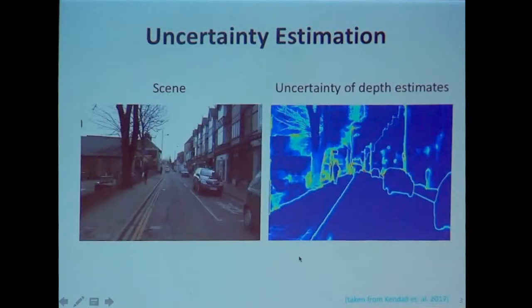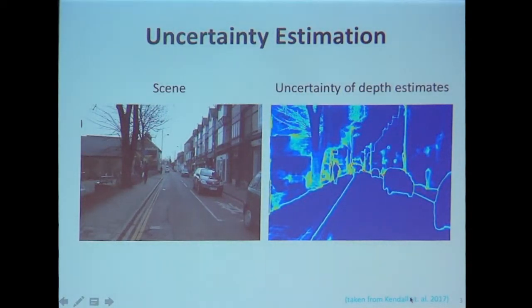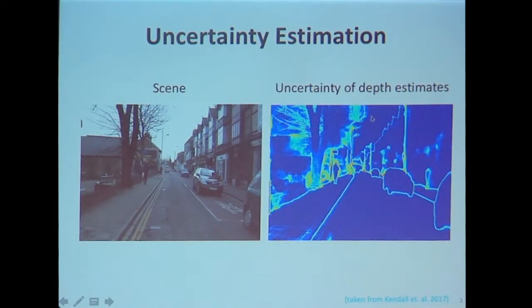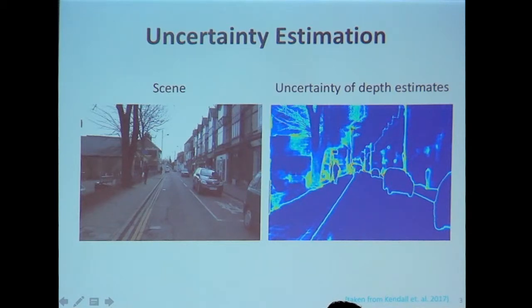You can use this uncertainty estimate to design methods that are robust and hopefully fail less often. For example, in this image taken from a paper, the left-hand side shows a scene your self-driving car might see, and the right-hand side shows an uncertainty estimate of depth — how far or close things are. The system is confused about some edges, perhaps unsure whether something belongs to the tree or the sky.